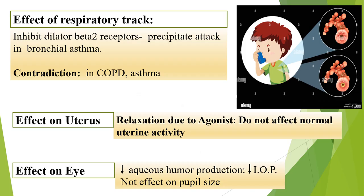Effect of beta blockers on the respiratory tract: beta-2 receptor antagonism inhibits bronchodilation, causing bronchoconstriction and potentially precipitating bronchial asthma attacks. Therefore, beta blockers are contraindicated in COPD as well as asthma.